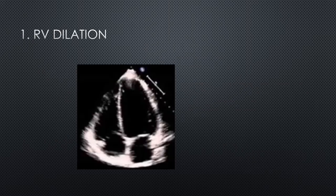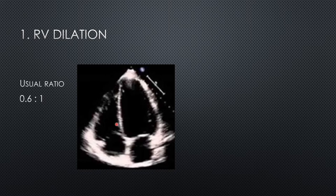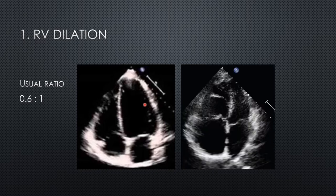The first of the core findings is RV dilation. In a normal apical four-chamber view, the RV should be 0.6 to 1 relative to the LV — so about 60% of the diameter of the LV. Here's an example of RV dilation where the RV is bigger than the LV — that's a severe RV dilation. As we said, RV dilation is not specific to PE; it can occur in lots of other conditions including chronic pulmonary hypertension.